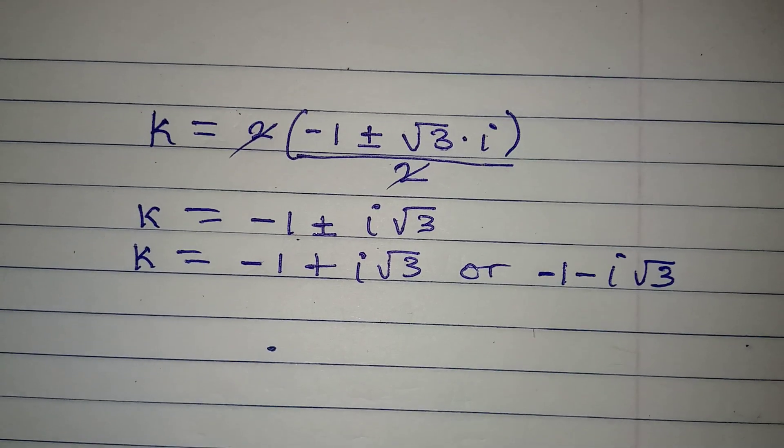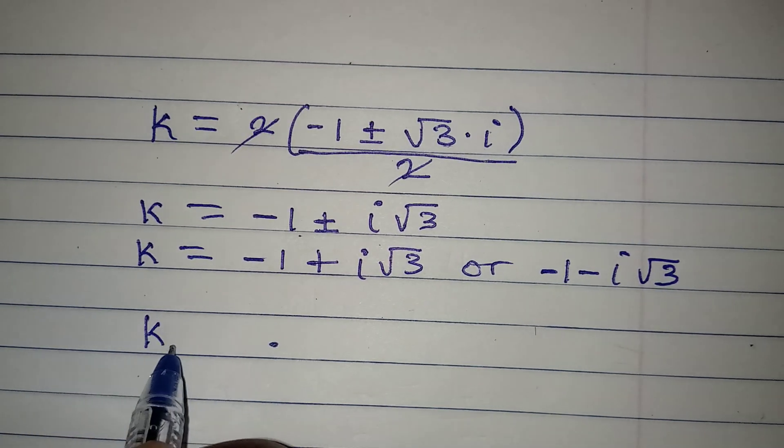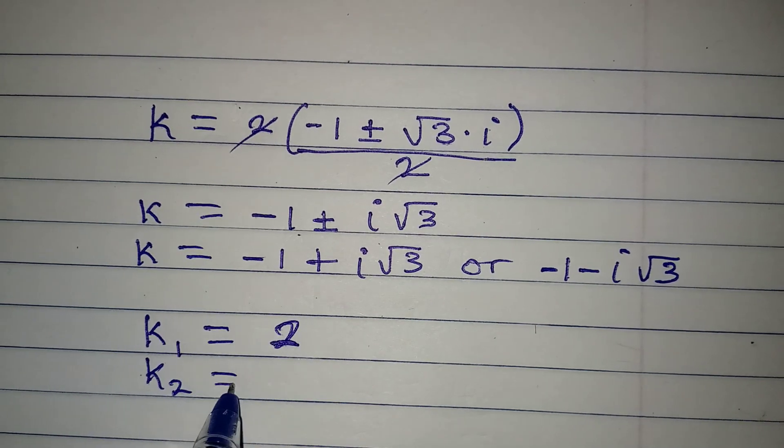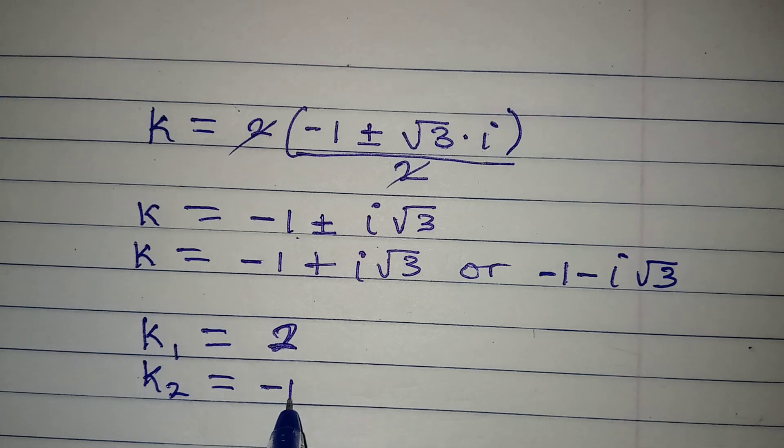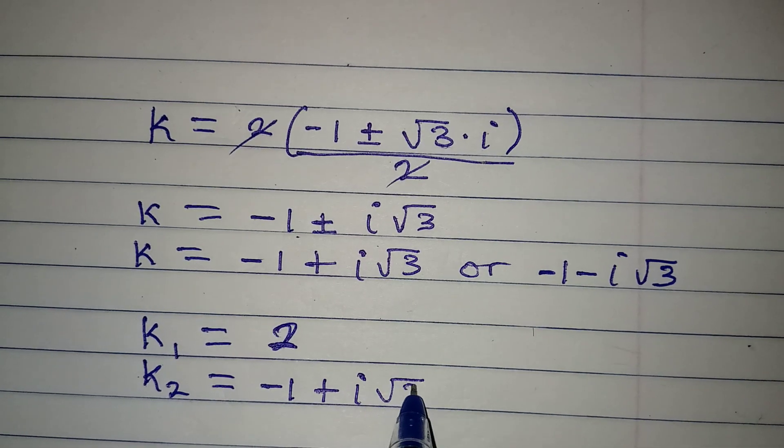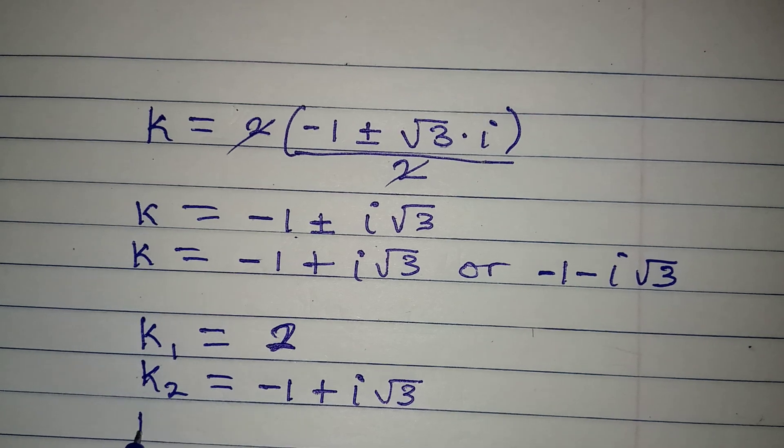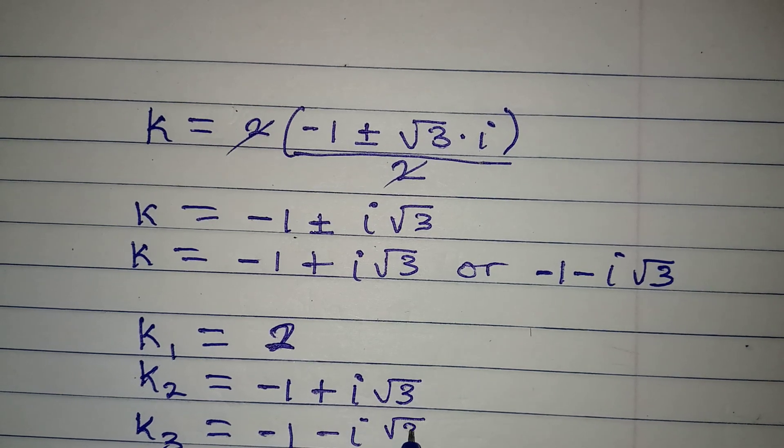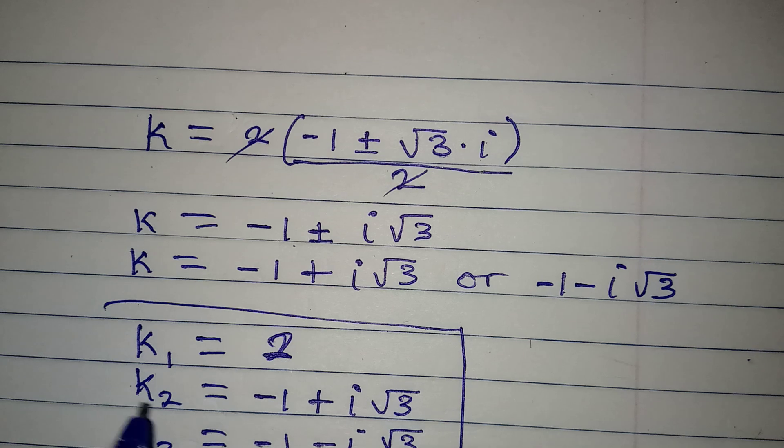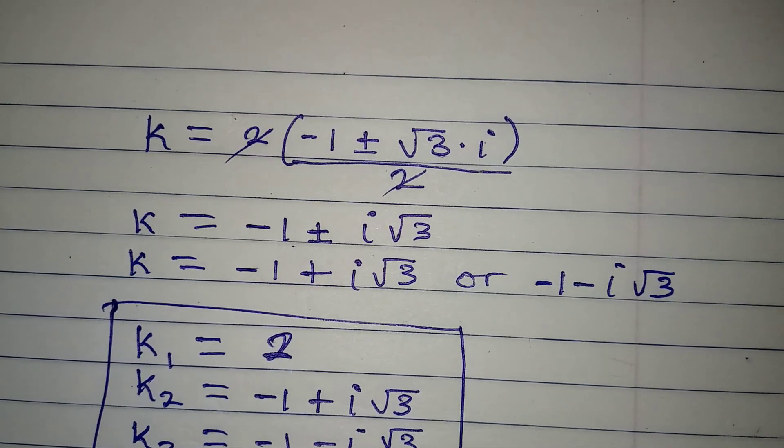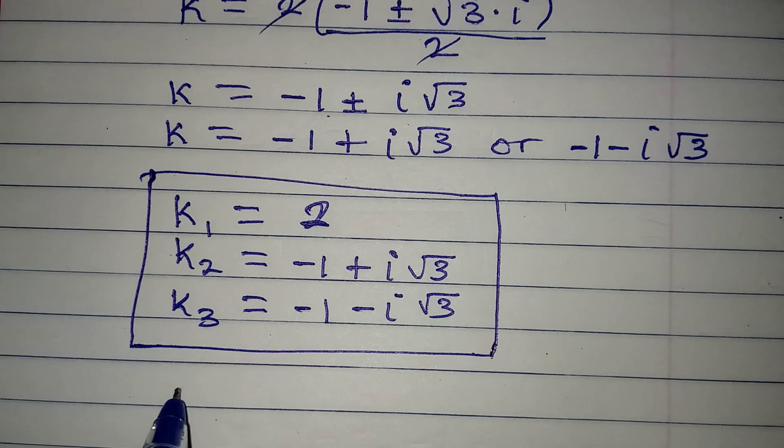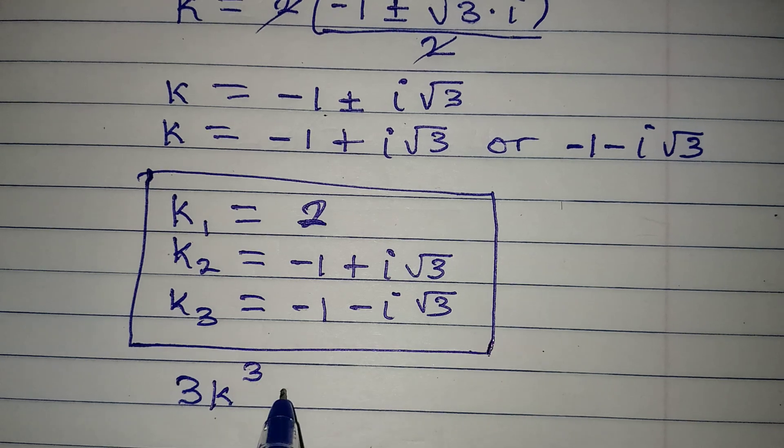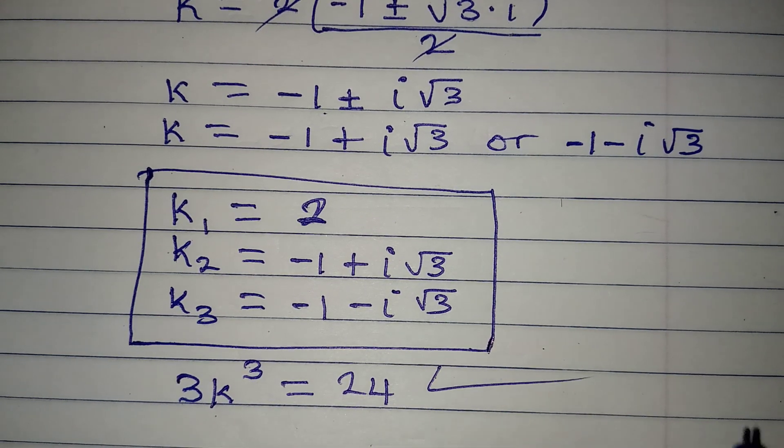Now let's bring the three solutions together. The first one, let's call it our k1, which is equal to 2. Then the second, our k2, is obtained here. And it will be -1 + i√3. Then our k3 will be -1 - i√3. So these are the three possible solutions to the equation, which is 3k³ being equal to 24. Thank you for watching.